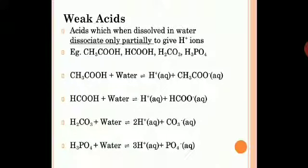Now let us see what weak acids are. An acid when dissolved in water that dissociates only partially to give H+ ions — meaning it will not dissociate completely and gives very few H+ ions — is called a weak acid. Examples include acetic acid (CH3COOH), formic acid (HCOOH), carbonic acid (H2CO3), and phosphoric acid (H3PO4). Please take down the names and formulas of these weak acids.